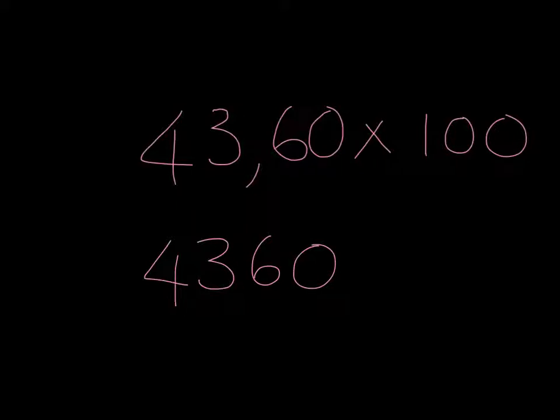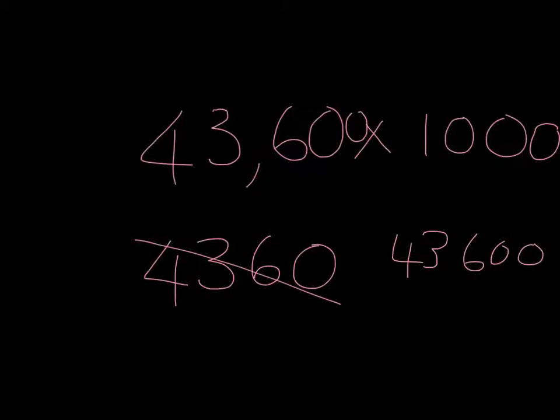We can do this for any multiple of 10 we wanted to. If, for example, we wanted 43 comma 6 multiplied by 1000, in this case, we see that we want to do 1, 2, 3 multiples of 10. So we need to move 1, 2, 3 over. Let's just add on a zero here so we can do that movement nicely. And we will go 1, 2, 3 over and we will get 43,600. Nice easy trick makes it very easy to do multiplication by 10.